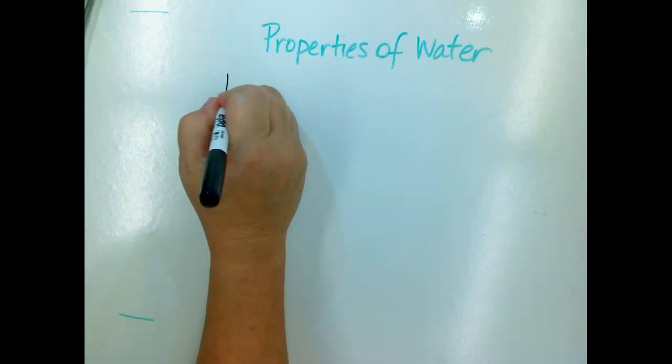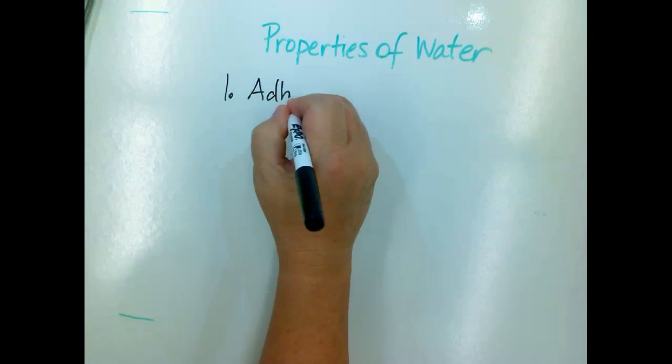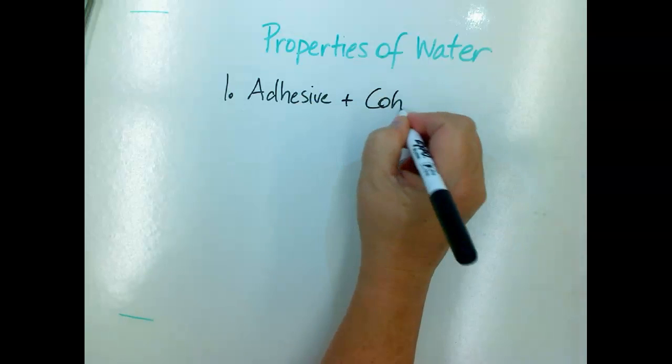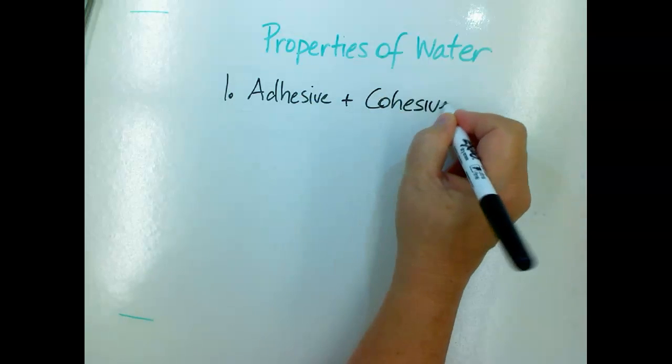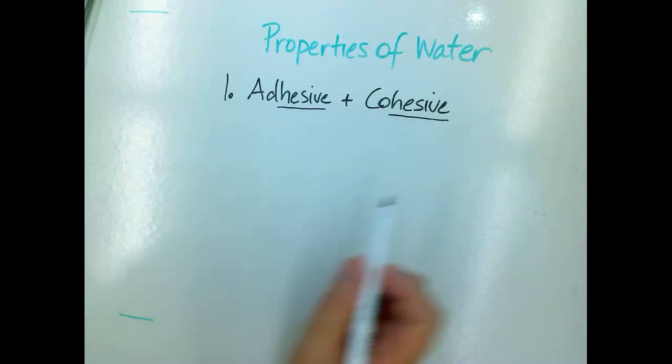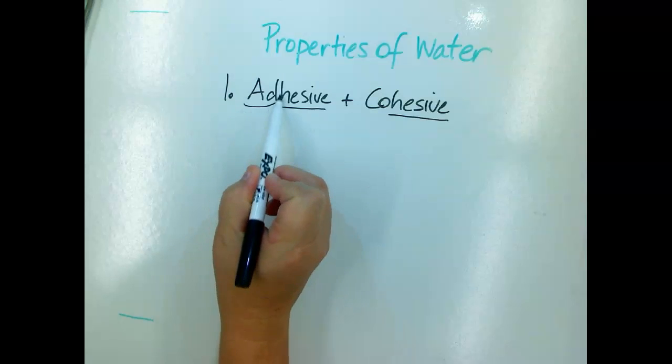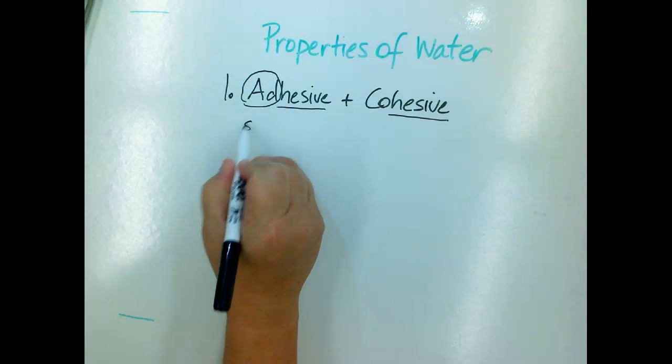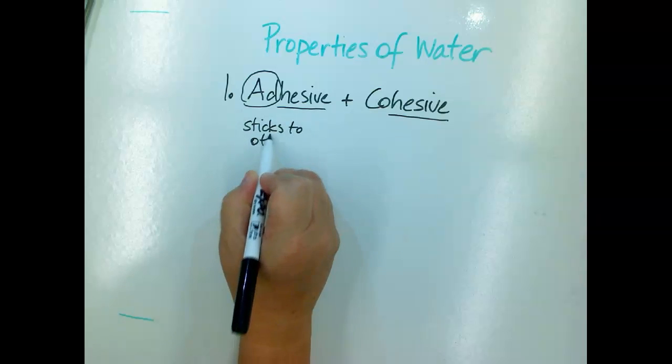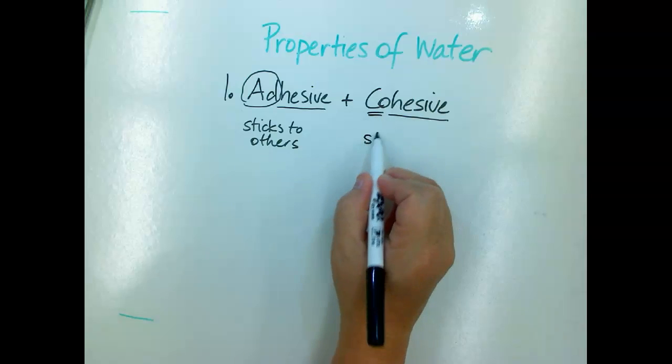The first properties are that water is adhesive and cohesive. This part tells you that it sticks. When something is adhesive it sticks to something else. So it sticks to other things and cohesive means it sticks to itself.